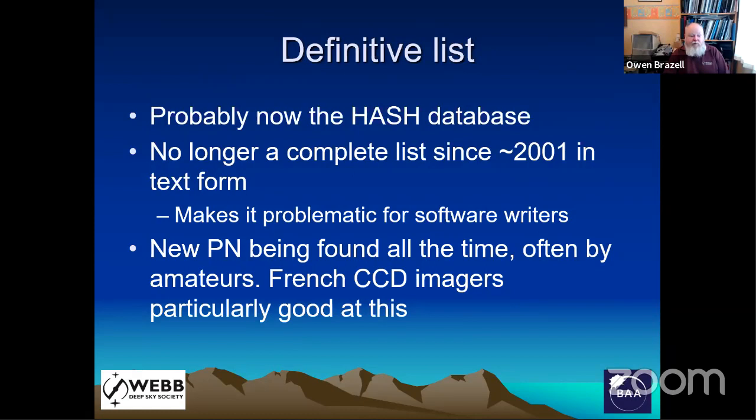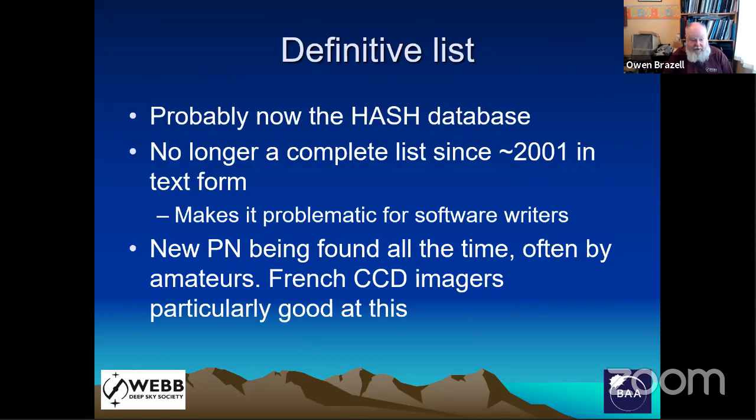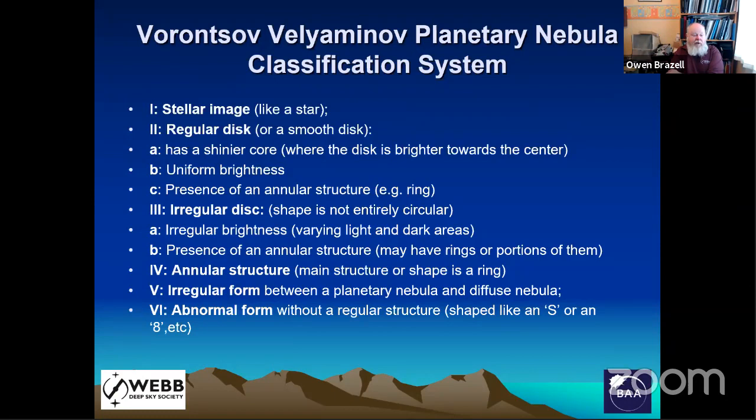New planetary nebulae are being found all the time, often by amateurs — French CCD imagers are particularly good at finding new nebulae. Vorontsov-Vel'yaminov came up with a classification system, primarily based on photographic and visual descriptions, so it may not have much relevance to physical structure anymore, but it still gives some idea of what you might be able to see.